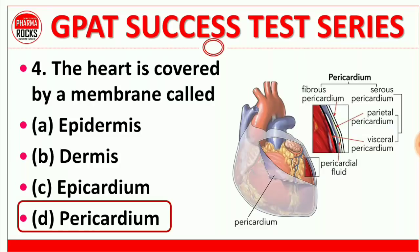The pericardium is the membrane covering the heart. It contains two main parts: the fibrous pericardium and the serous pericardium. The serous pericardium is further classified into the parietal pericardium and the visceral pericardium, and pericardial fluid is also present within it. Question 4 right answer is D.